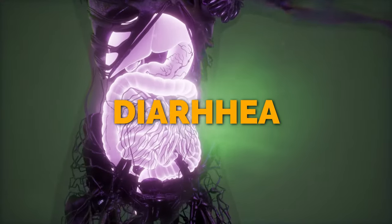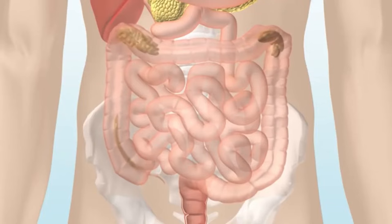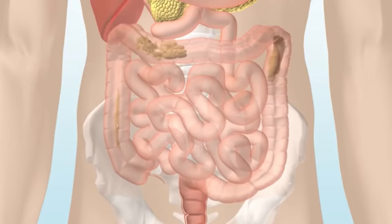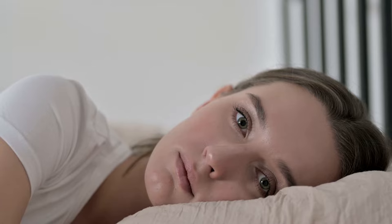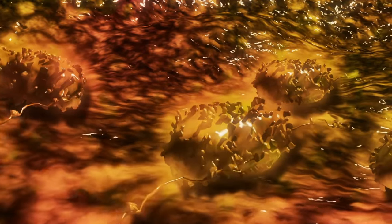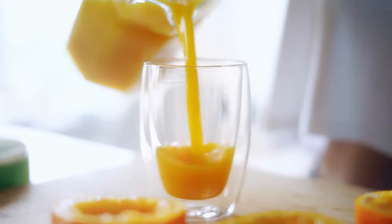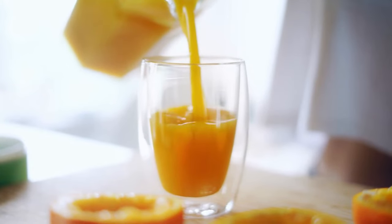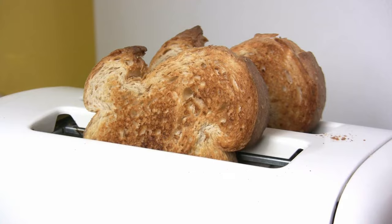Number 5: Diarrhea. Diarrhea is characterized by loose, watery stools three or more times a day. It can be caused by food intolerance like lactose intolerance, or viral or bacterial infections. It can easily be treated at home by drinking plenty of fluids and following the BRAT diet: bananas, rice, applesauce, and toast.